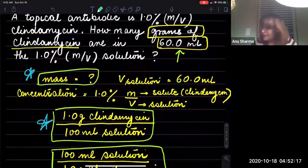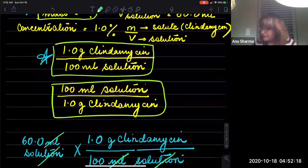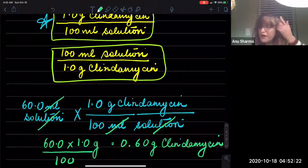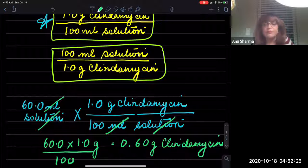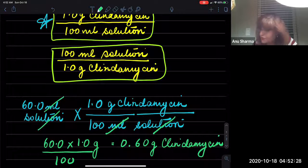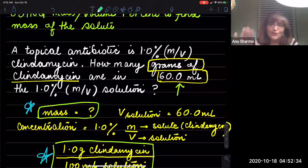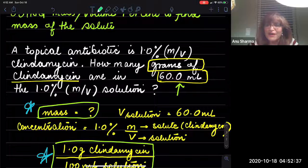That is a way of calculating the mass — and also the volume, depending on which variable is given — using mass by volume percent problems. Thank you, I hope you found this helpful. Bye-bye.